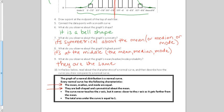The curve never touches the x-axis, but comes closer and closer to the x-axis as it gets further from the mean. So, this means the x-axis is an asymptote. I can put that on there. And the total area under the curve is equal to 1.